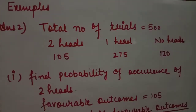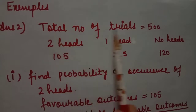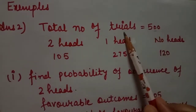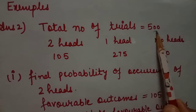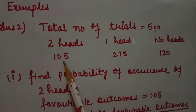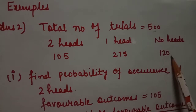Example 2: Two coins are tossed 500 times. We get two heads 105 times, one head 275 times, and no head 120 times. We have to find the probability of occurrence of each of these events. The total number of trials is 500.